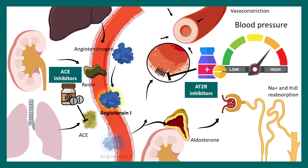There are also other inhibitors which inhibit the binding of angiotensin to the angiotensin receptor. These receptor inhibitors further decrease blood pressure. Many of the medications generally prescribed to patients to control blood pressure target this particular pathway. From a pharmacological point of view, this pathway is super important for regulating blood pressure.